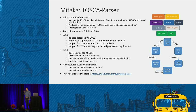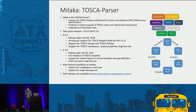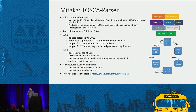The parser reads different TOSCA entities — TOSCA node types, capabilities, interfaces, policies, groups, and any custom types — and produces an in-memory graph of different nodes and the relationships among them.